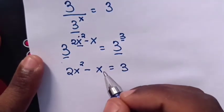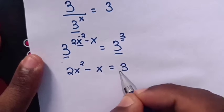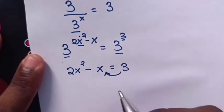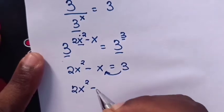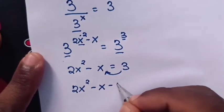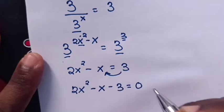Then we take 3 to the left side. So our equation will be 2x square minus x minus 3 equals 0.